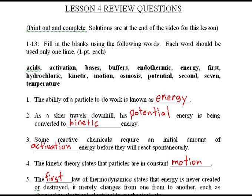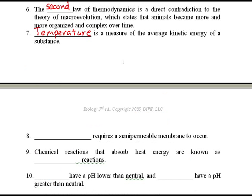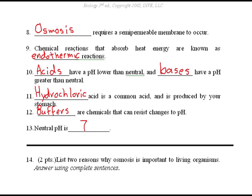Let's go ahead and look at the solutions to the lesson four review questions. Number one is energy. Number two, as a skier travels downhill, his potential energy is being converted to kinetic energy. Number three is activation. Number four is motion. Number five is first. Number six is second. Number seven is temperature. Number eight is osmosis. Nine endothermic. Ten acids and bases have a pH greater than neutral. Eleven hydrochloric, twelve buffers, and thirteen neutral pH is seven.